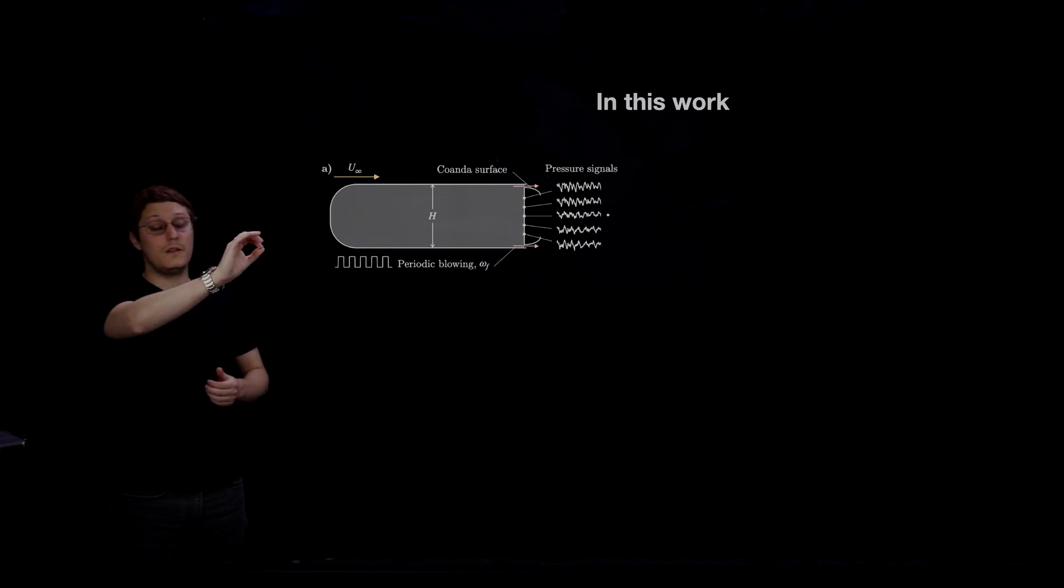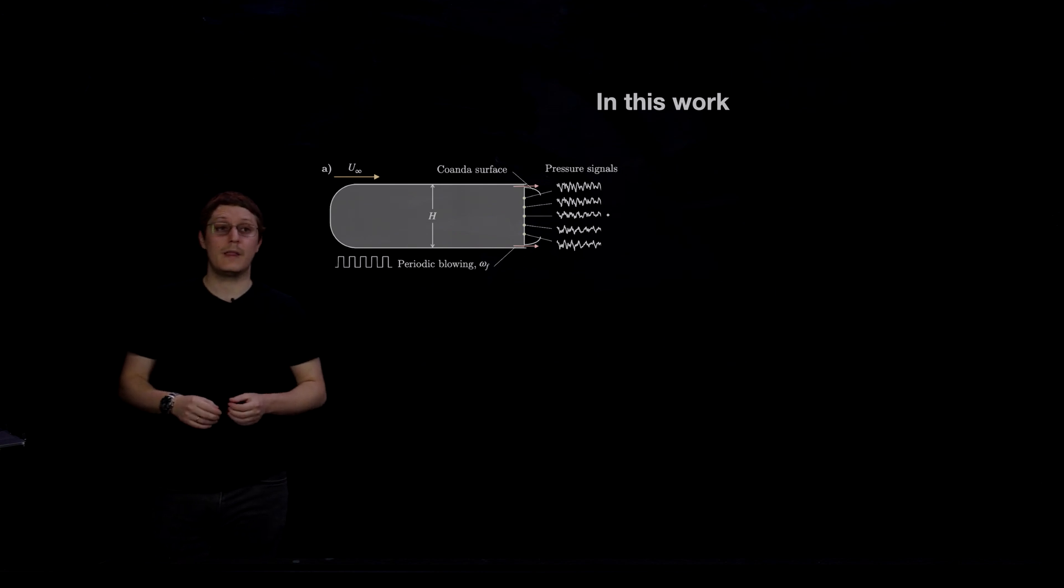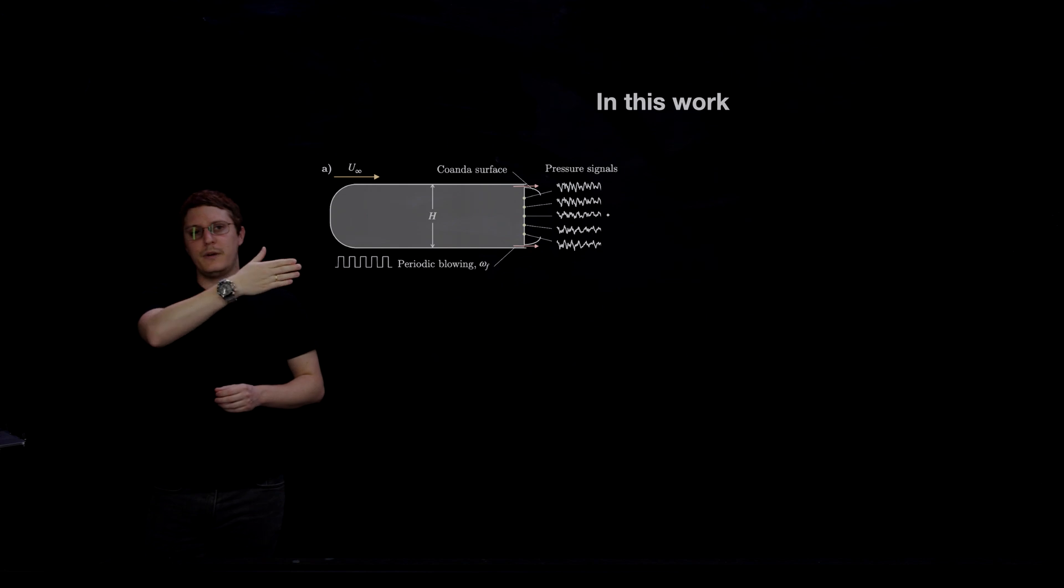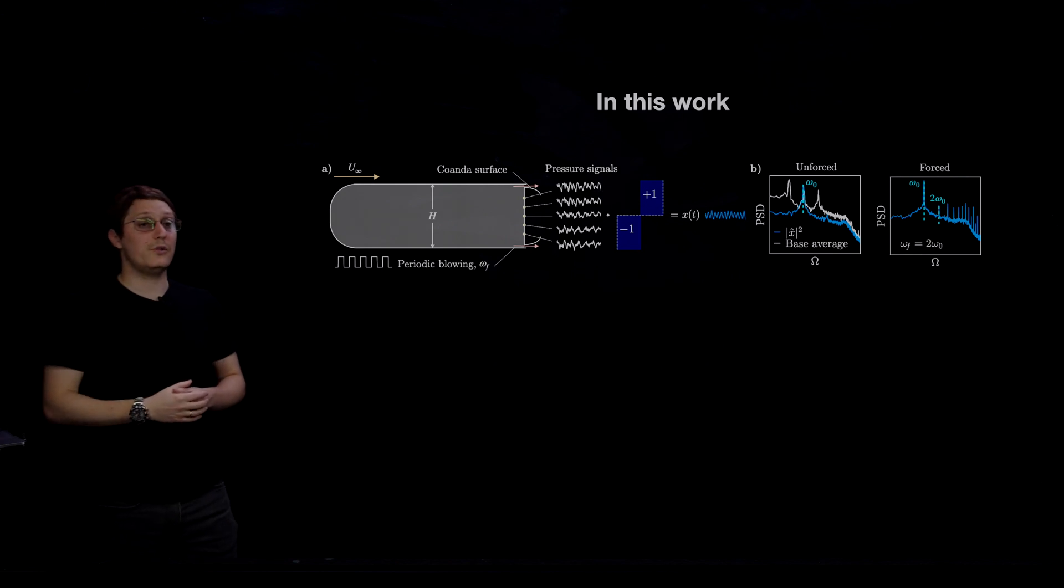The body has two thin slits located at the upper and lower trailing edges, through which we do periodic blowing. And it has these two curved Coanda surfaces on the back that deflect the outcoming jets into the wake for a more effective actuation. We have five timers of pressure sensors located at the rear face of the body, positioned in the center plane in the spanwise direction. And what we do with these signals is take a weighted average to obtain this output signal x.